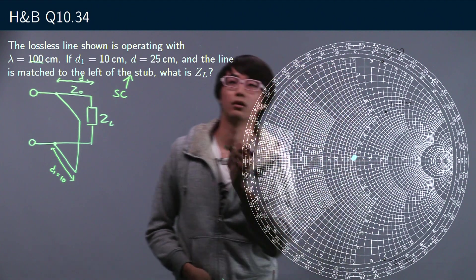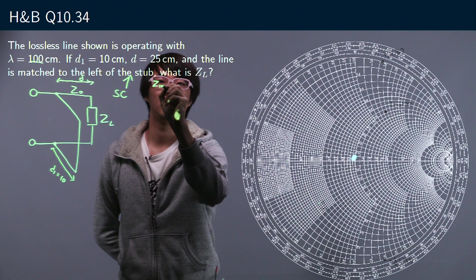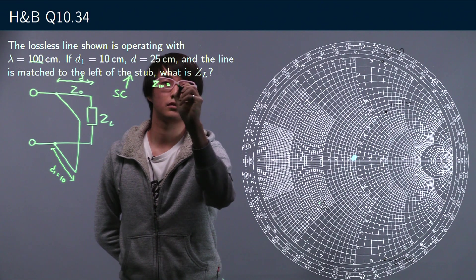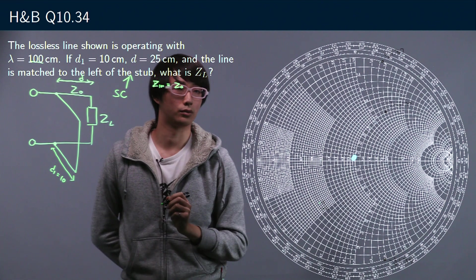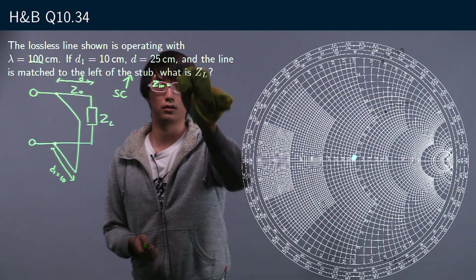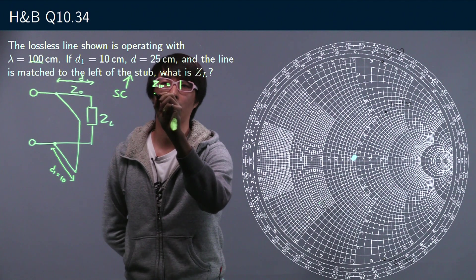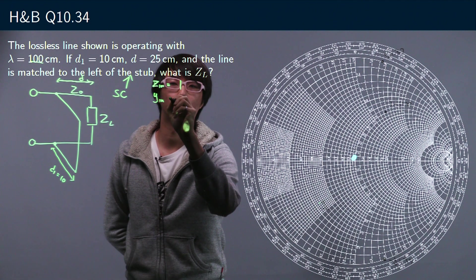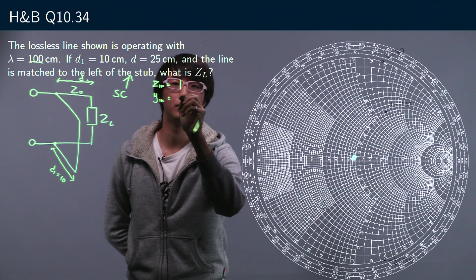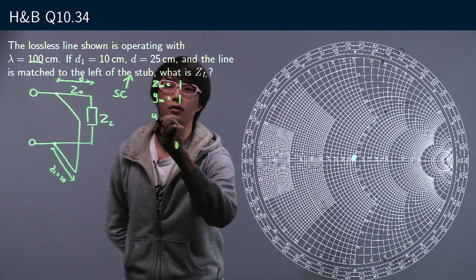So if the line is matched, then that means that the normalized input impedance is equal to Zin/Z0 is equal to one. And consequently the input normalized input admittance is also equal to one.